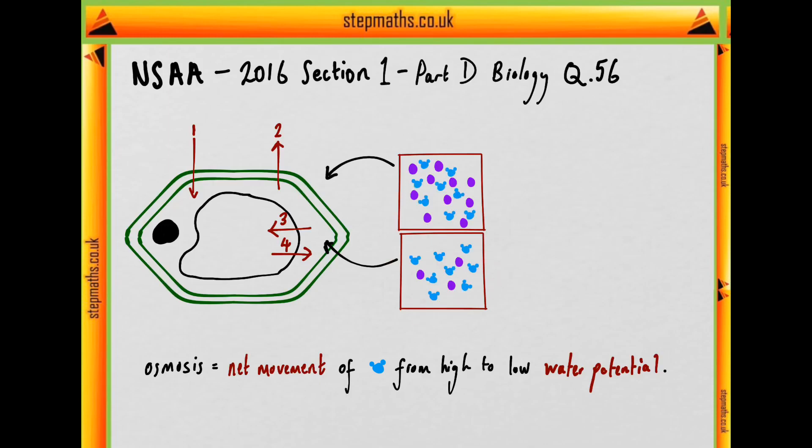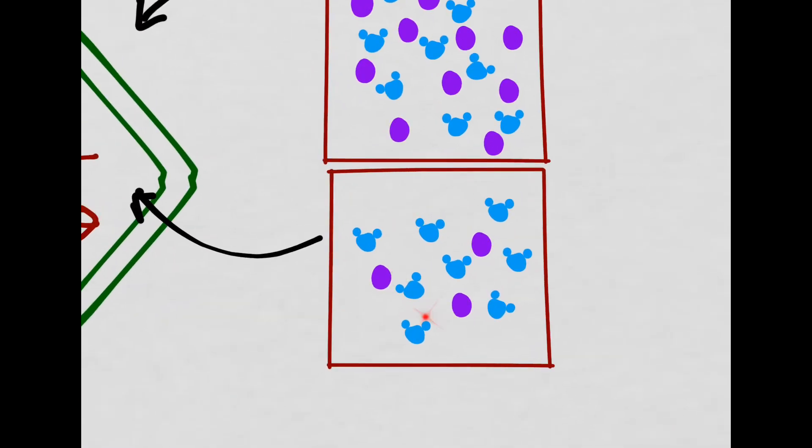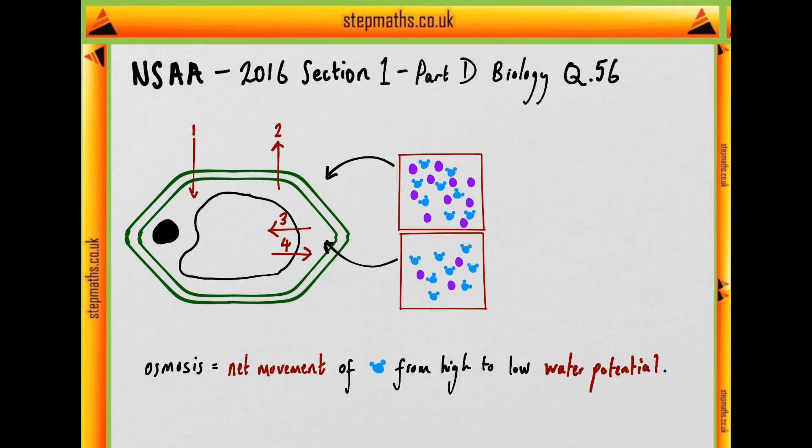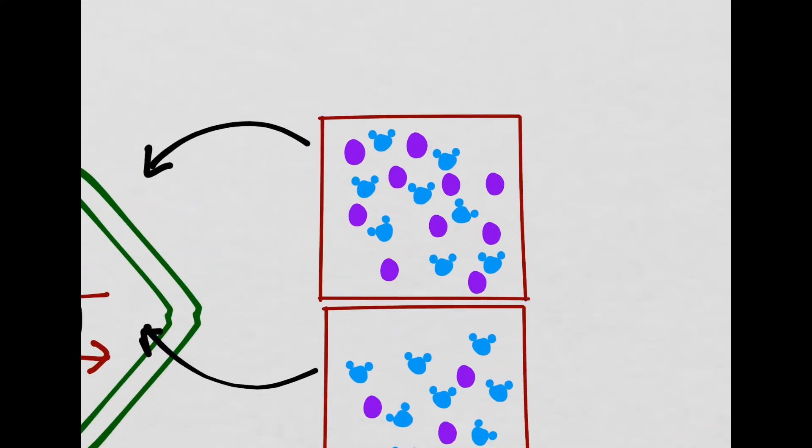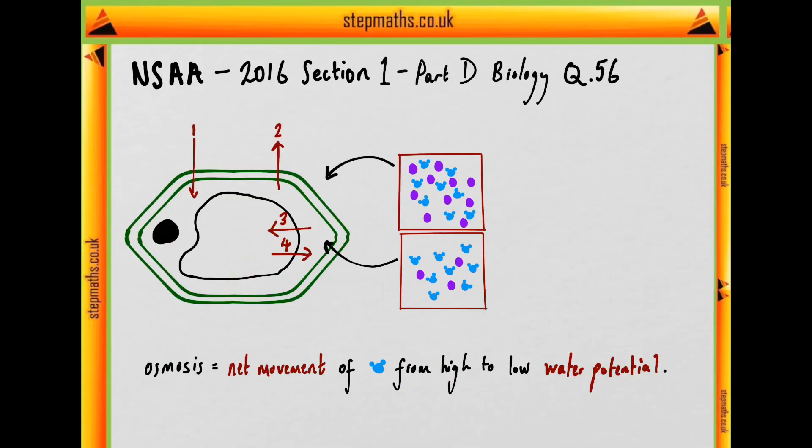That will mean that there is a higher water potential in the less concentrated cytoplasm than in the surrounding solution, since these water molecules are less free to move owing to the concentration of solute.